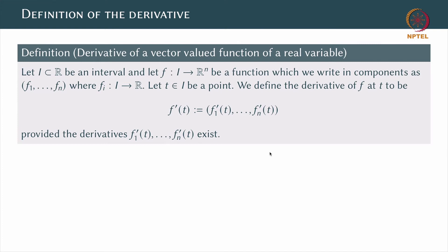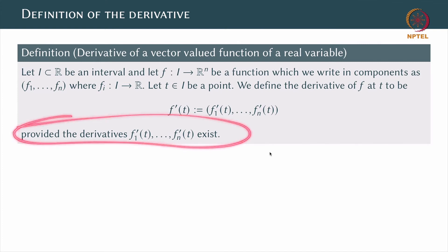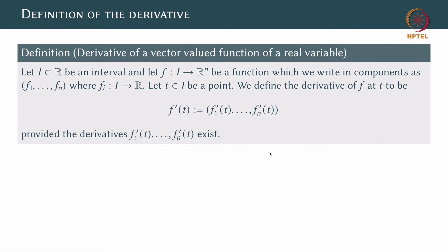Of course, this definition makes sense only when the derivatives f1 prime, dot dot dot, fn prime exist. This is, as you can expect, an utterly straightforward extension of the usual notion of the derivative to a more general setting. Most of the facts about this scenario are going to be quite straightforward and are going to be left to you as exercises.